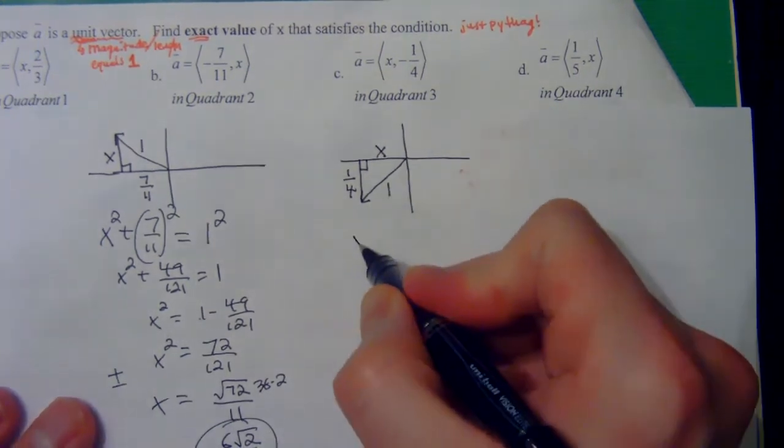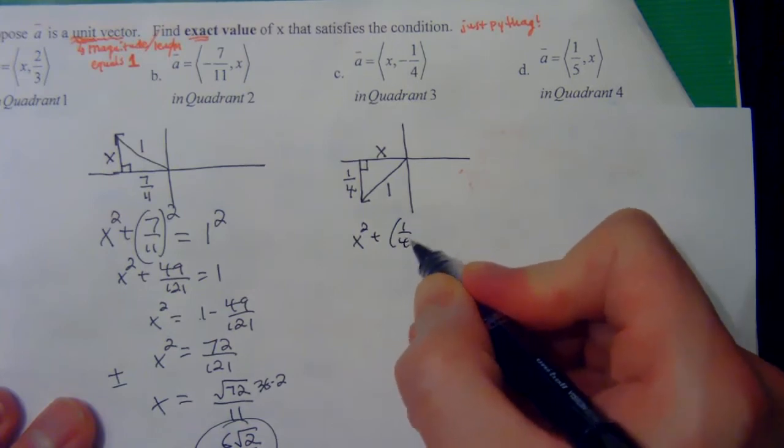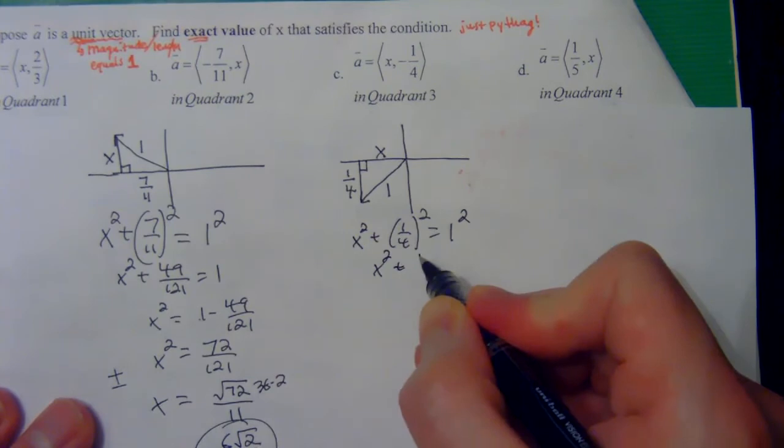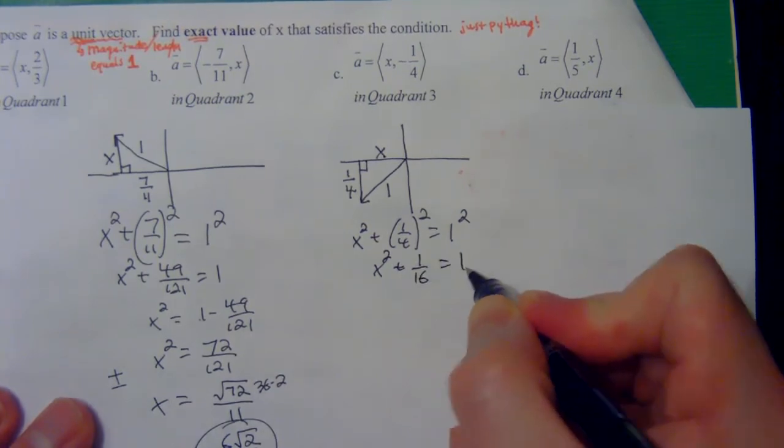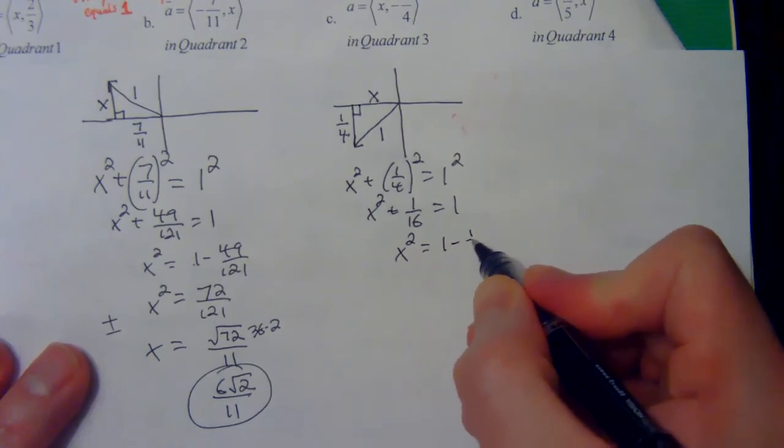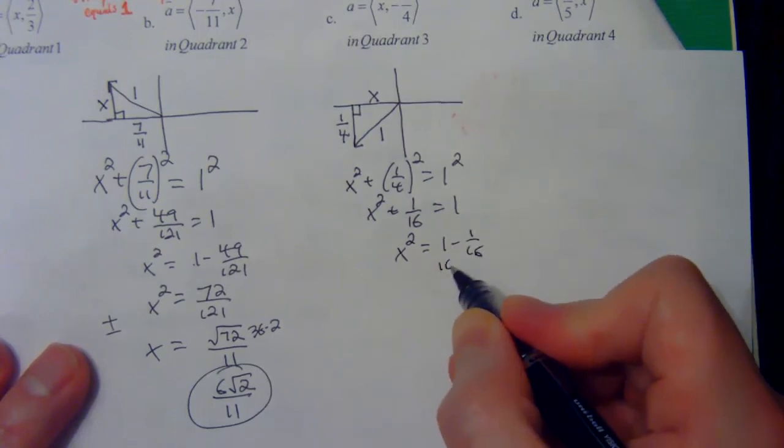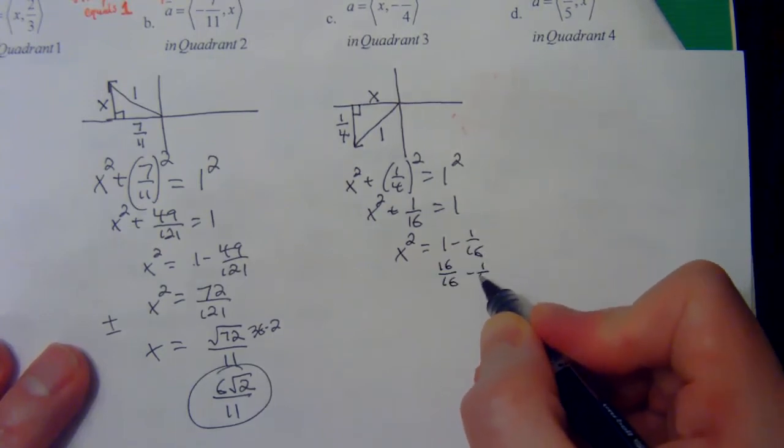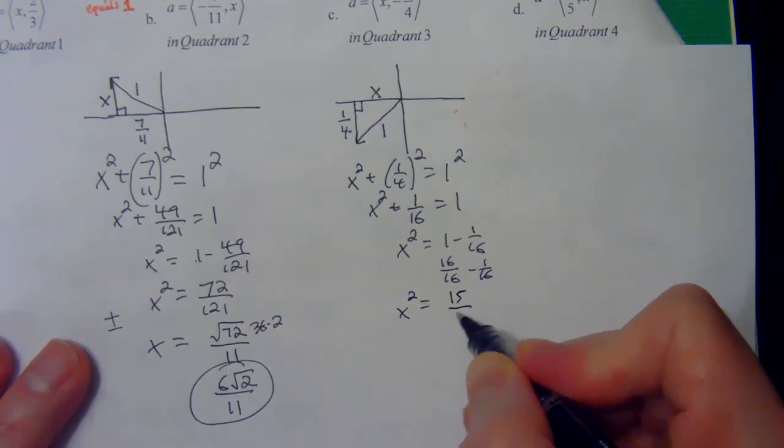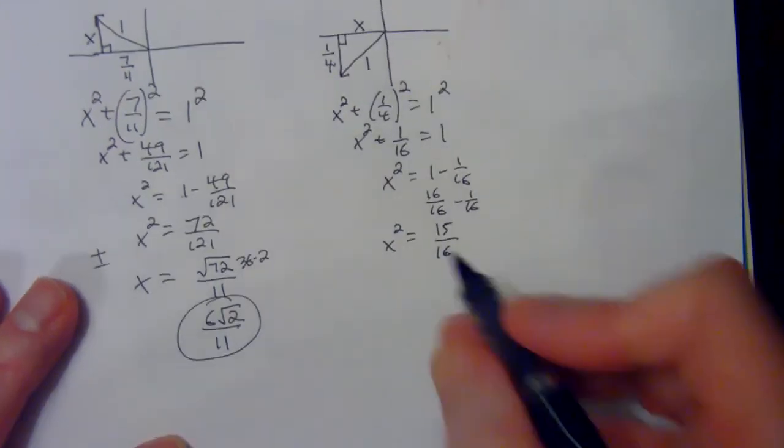I'm going to do my Pythagorean theorem again. I'm going to go x squared plus one-fourth squared equals one squared. That'll be x squared plus one over 16 equals one. I'm going to subtract one over 16 from both sides. This is really like 16 over 16 minus one over 16, but you can use your calculators for that. That's going to give us 15 over 16.